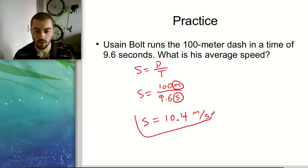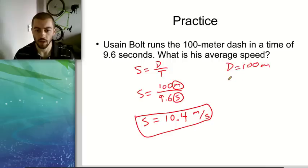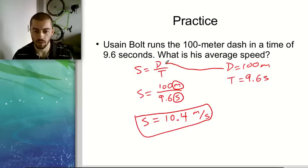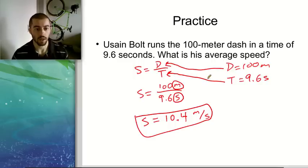So again, to use the speed formula, all we have to do is plug in the numbers in the right spots. Because we had our distance was 100 meters and our time was 9.6 seconds. So the distance goes in the distance spot in the equation and the time goes in the time spot in the equation. And that's all it takes.